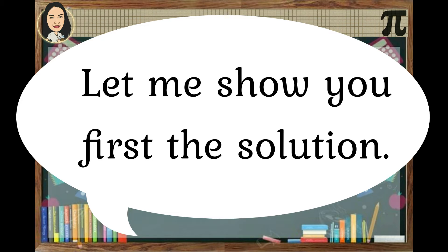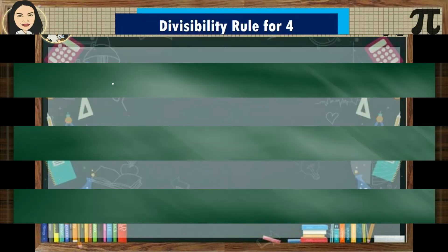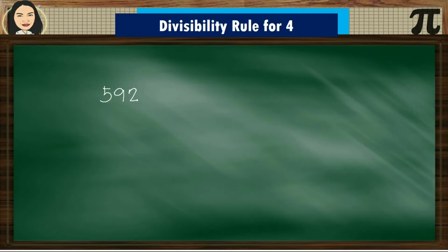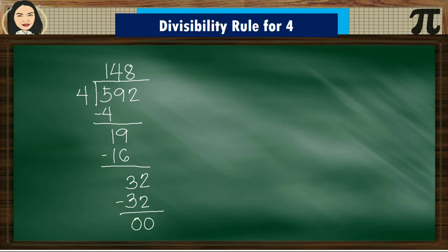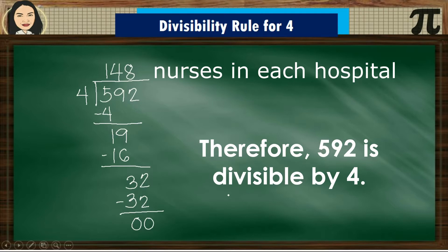Let me show you first the solution. Divisibility Rule for 4: 592 divided by 4. 5 divided by 4 is 1; 1 times 4 is 4; 5 minus 4 equals 1. Bring down 9: 19 divided by 4 is 4; 4 times 4 equals 16; 19 minus 16 is 3. Bring down 2: 32 divided by 4 equals 8; 8 times 4 is 32; 32 minus 32 is 0. The answer is 148 nurses in each hospital. Therefore, 592 is divisible by 4.